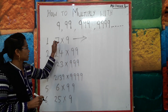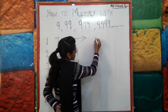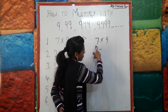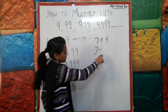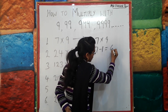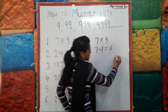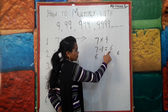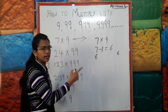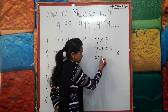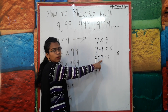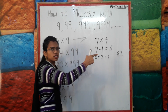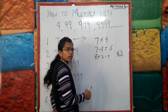First, we have to multiply 9 with a single digit. For example, 7 × 9. The first step: take the first digit — that is 7. Do 7 minus 1, which equals 6. So 6 is the first digit of the answer. This is the trick.